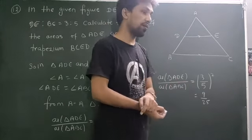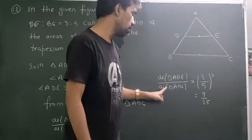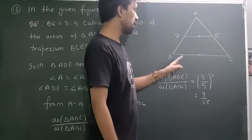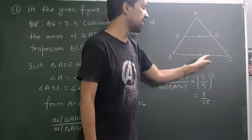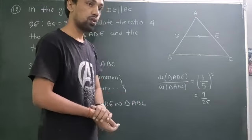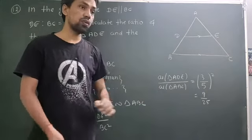If the area is 25k, then if we have the area of △ADE as 9k, and area of △ABC as 25k, then area of BCED is 16k. Then the ratio of both is 9:16.